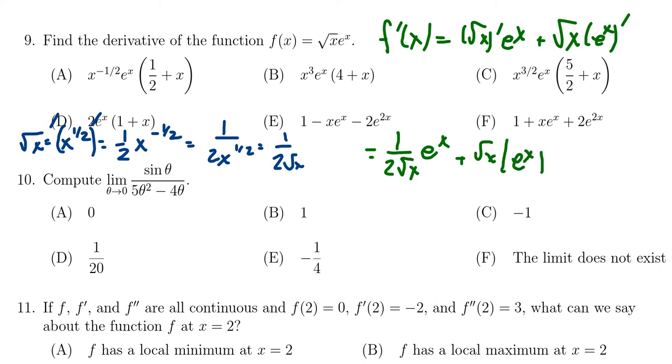And so now let's look for the result that resembles what we have right here. You don't see exactly what I have in front of us, but it looks like a lot of the answers have e to the x factored out. We could try doing that. If you factor out e to the x, you're going to end up with one over two times the square root of x plus the square root of x.